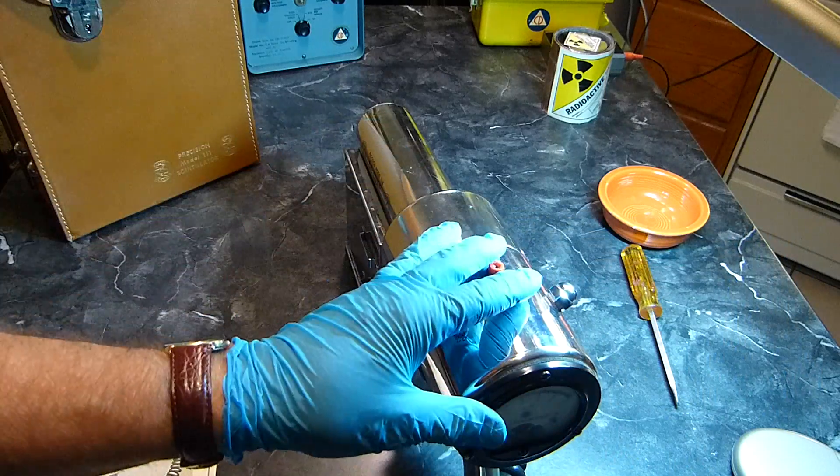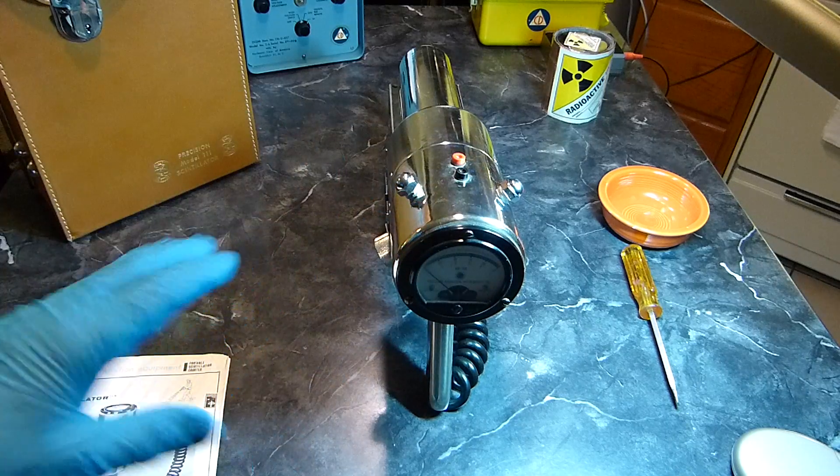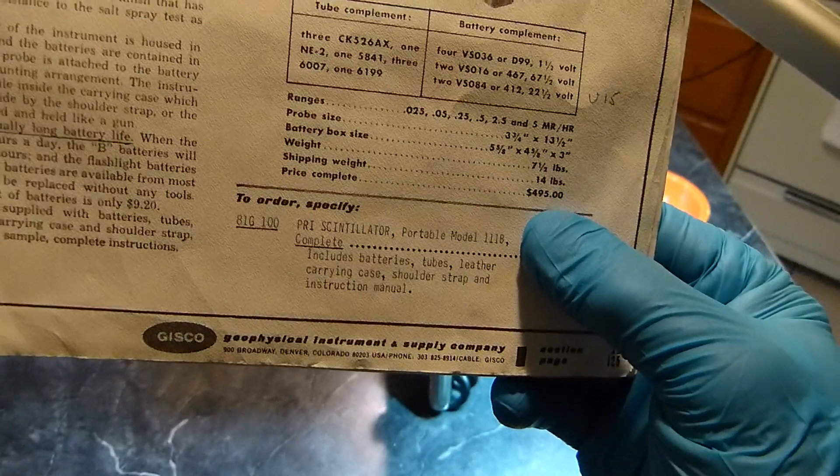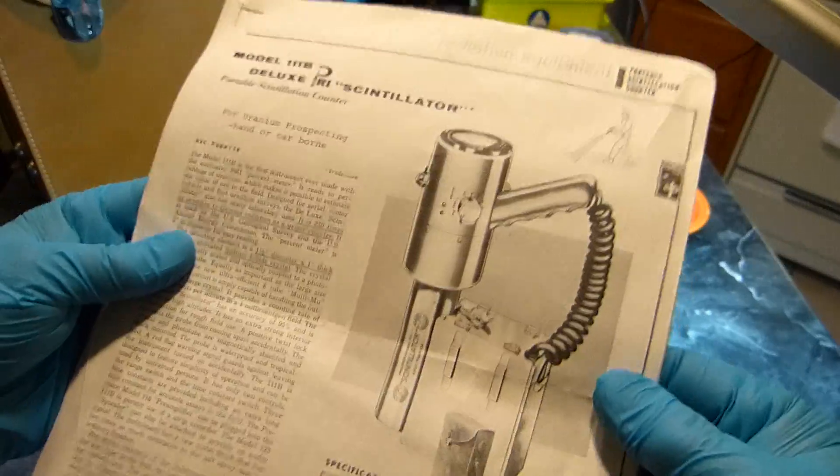Here's the manual with it. Look what this thing cost in 1954: $495. It's got everything in here, schematic and all. This is the battery pack. Let me show you the real thing.